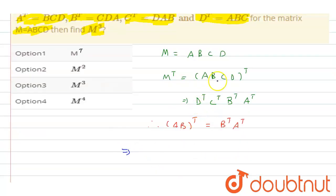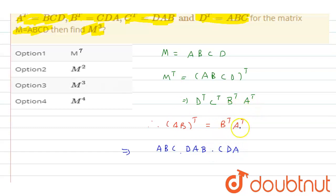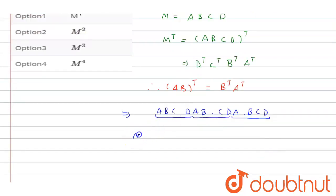Now substituting: D transpose equals ABC, C transpose equals DAB, B transpose equals CDA, and A transpose equals BCD. So M transpose equals ABC · DAB · CDA · BCD. You can see that grouping these gives ABCD · ABCD · ABCD, which equals M · M · M.